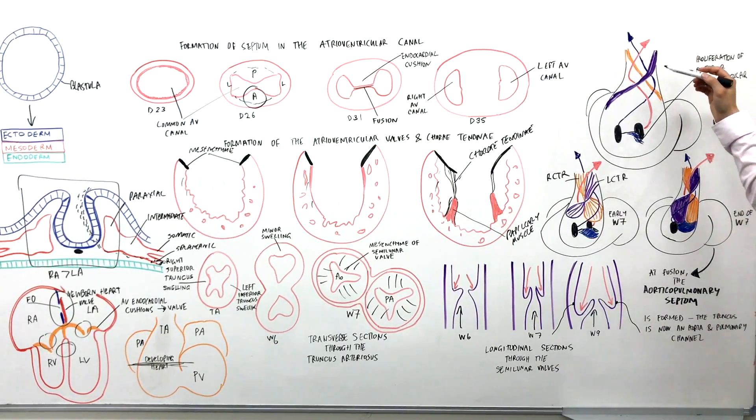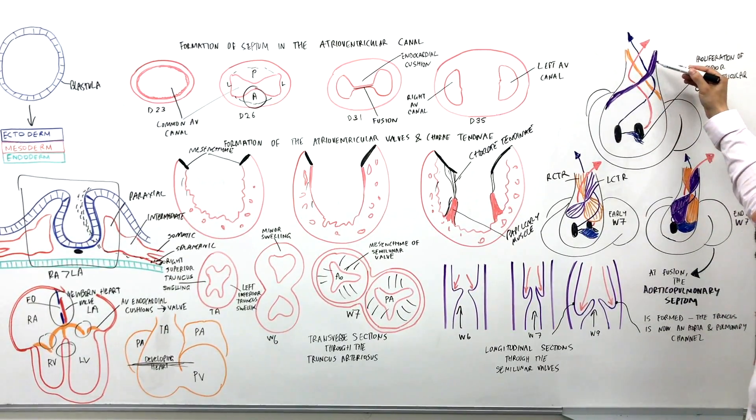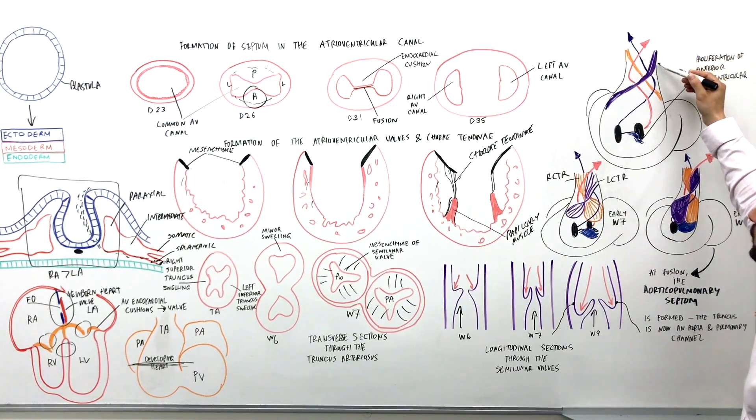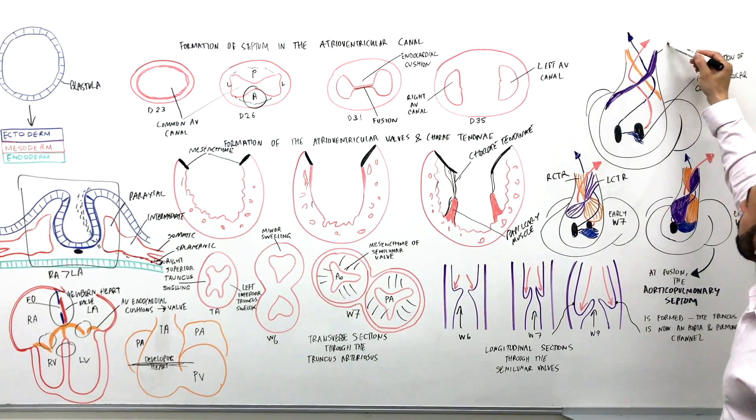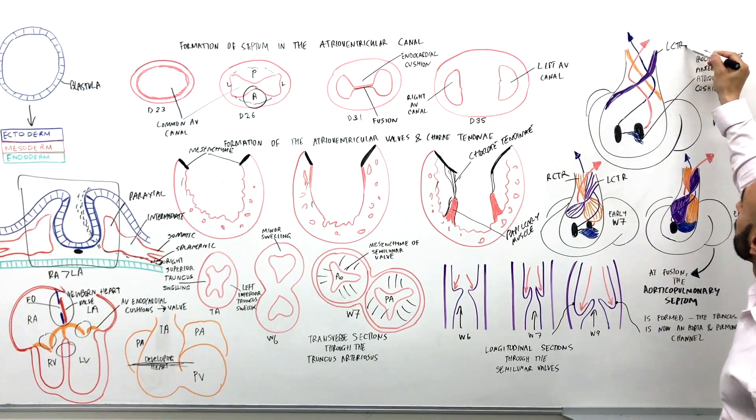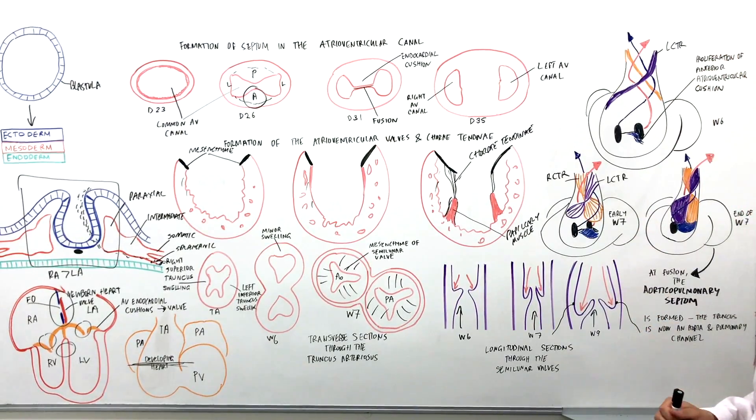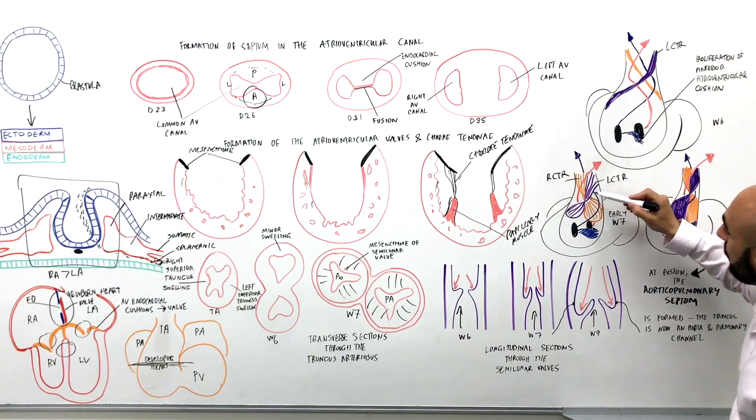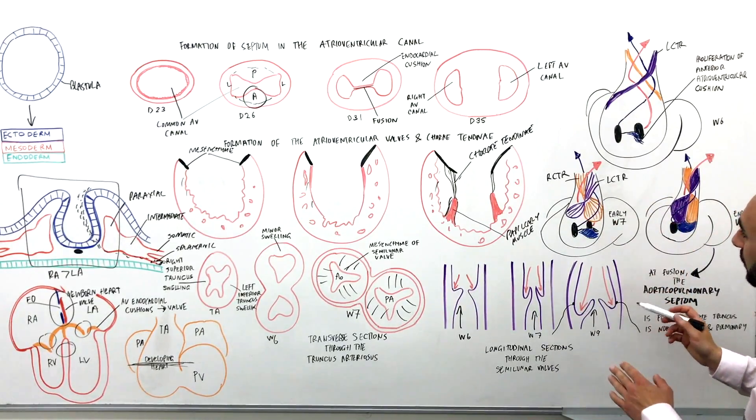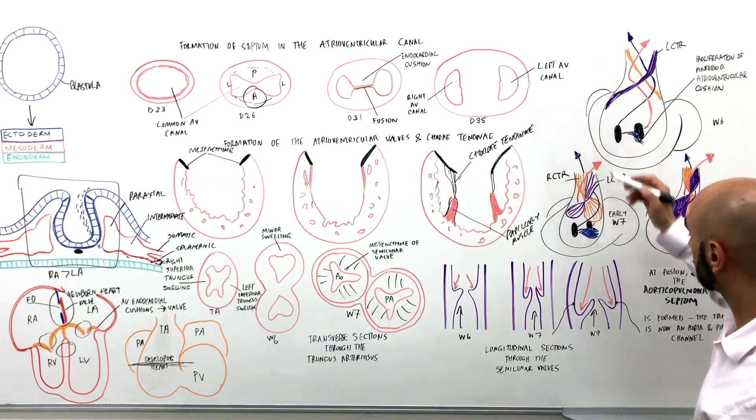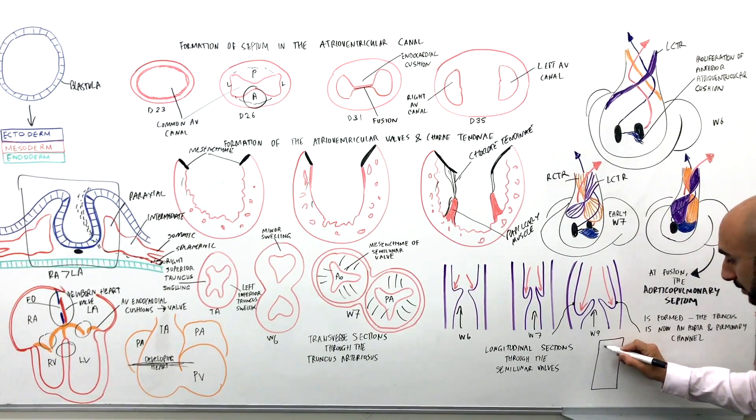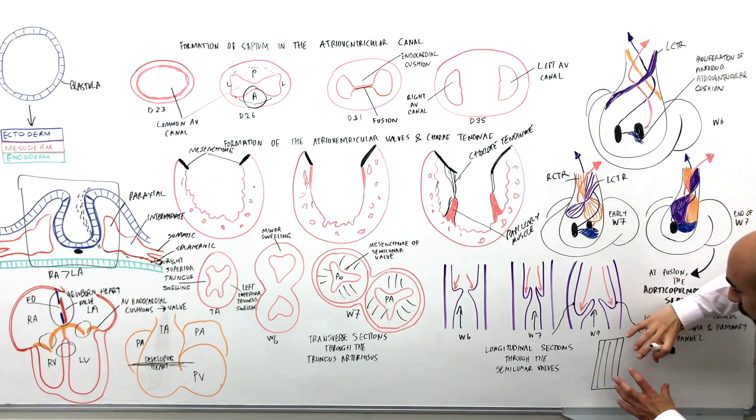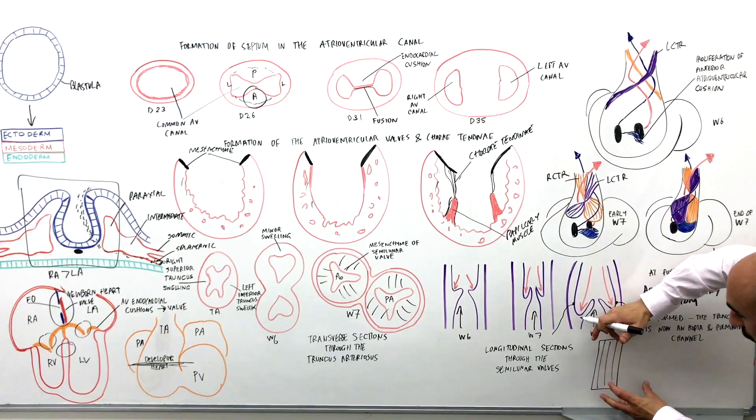So if we only look at this purple, this is the left conotruncal ridge. And that proliferates. So you notice that there's a bit of a twist here. Imagine this if it was flat looks like this, but because of a twist, so we're twisting just the top, let's say it looks like this.